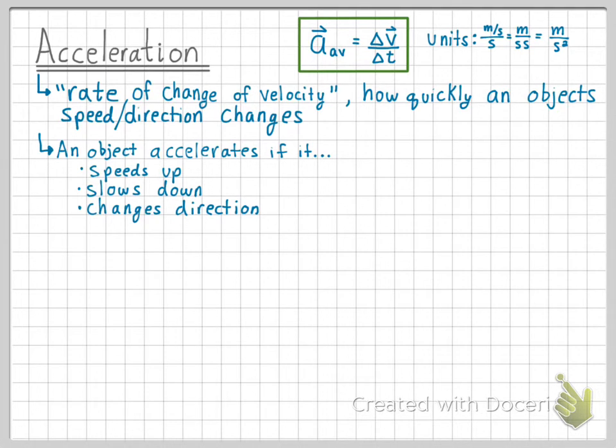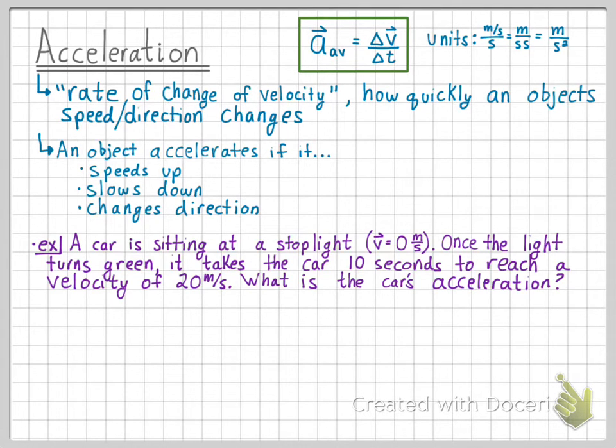Let's look at our average acceleration equation by walking through an example. A car is sitting at a stoplight, and whenever an object is sitting still, we know that the velocity is zero meters per second. Once the light turns green, it takes the car ten seconds to reach a velocity of twenty meters per second. What is the car's acceleration?